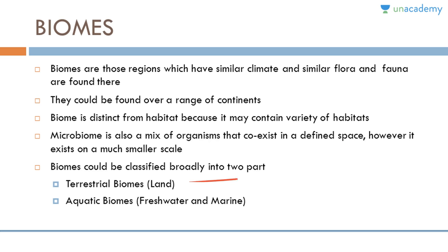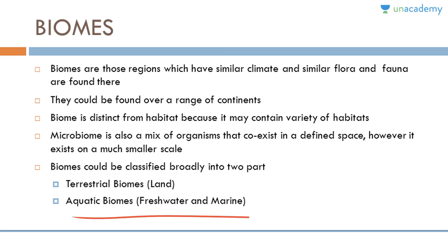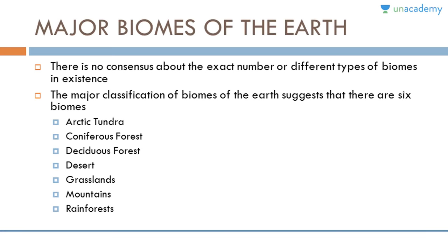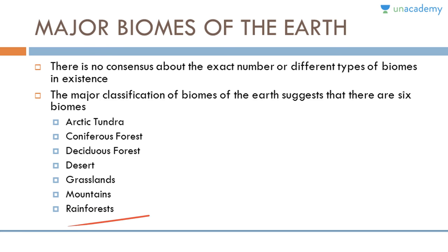Biomes can be classified broadly into two parts: terrestrial biomes, which exist on land, and aquatic biomes, which exist in freshwater and marine environments. There is no consensus about the exact number of biomes, but major classification suggests six biomes: arctic tundra, coniferous forest, deciduous forest, desert, grasslands, mountains, and rainforests.